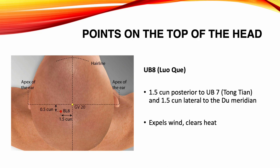Urinary Bladder 8, Luo Chie. Location: 1.5 Sun posterior to Urinary Bladder 7, and 1.5 Sun lateral to the du meridian. Functions: expels wind, clears heat. Indications: headache, dizziness, nasal congestion, tinnitus, blurred vision.